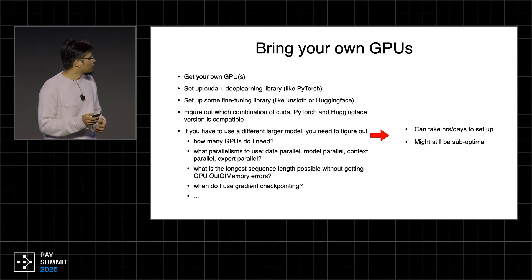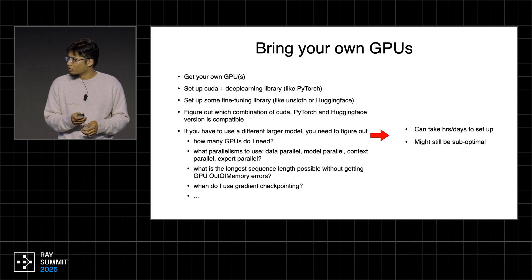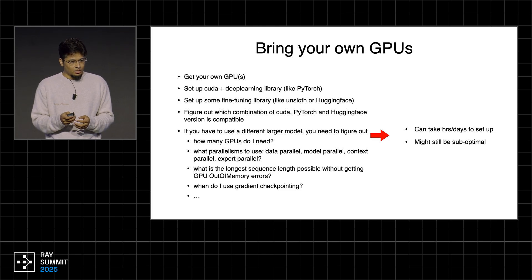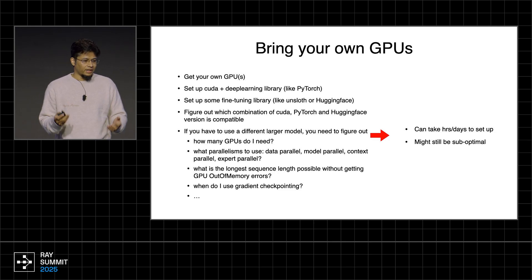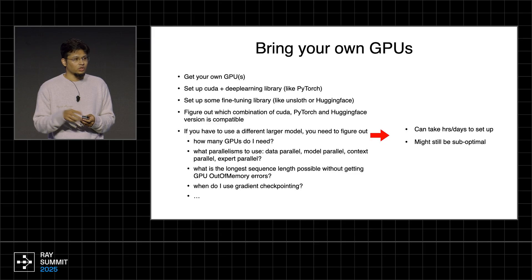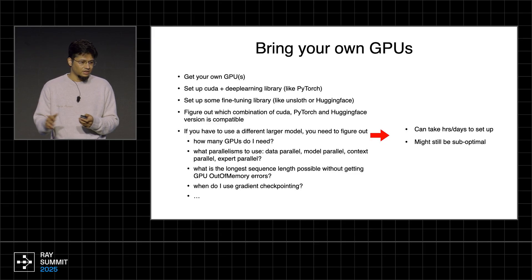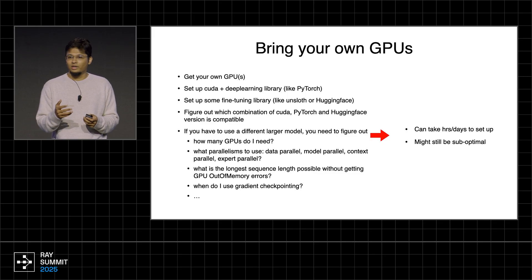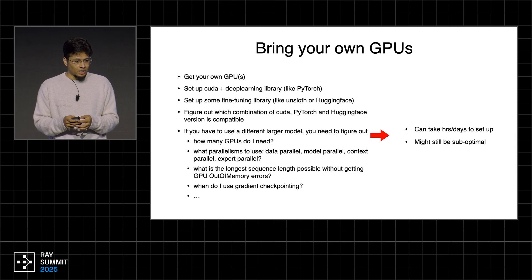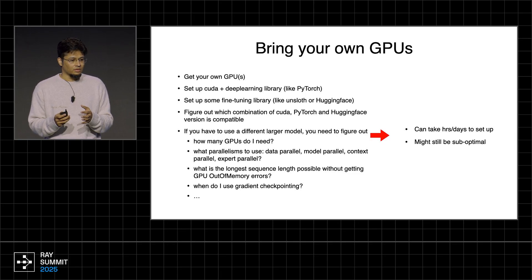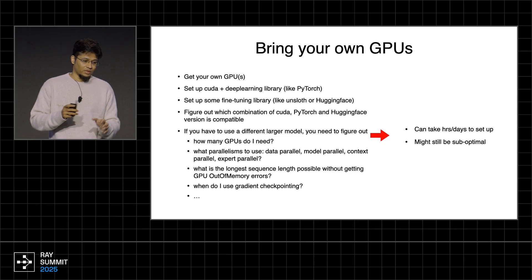So what do you have to do when you bring your own GPUs? You have to go and rent some GPUs, set up CUDA and a deep learning library like PyTorch or JAX, set up a fine-tuning library like Unsloth or HuggingFace or Verl, and figure out what combination of CUDA, PyTorch, and HuggingFace versions are compatible with each other.